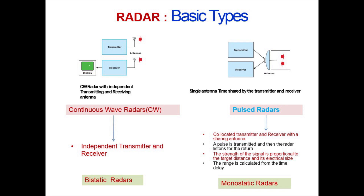Types of radars: radars are basically classified into two types. First, continuous wave radars, also called CW radars. Second, pulse radars. In CW radars, we have independent transmitting and receiving antennas, so they are also called bi-static radars. In pulse radars, we have a single antenna shared among transmitter and receiver — a co-located transmitter and receiver with time-shared antenna, also called monostatic radars. A pulse is transmitted and then the radar listens for the return. The strength of the signal is proportional to the target distance and its electrical size, and the range is calculated from the time delay.